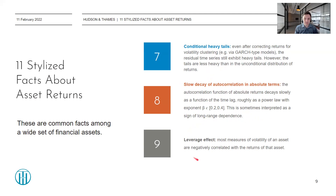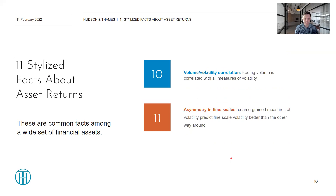Point nine is the leverage effect: most measures of volatility of an asset are negatively correlated with the returns of that asset. Point ten is volume/volatility correlation: trading volume is correlated with all measures of volatility. Point eleven is asymmetry in timescales: coarse-grained measures of volatility predict fine-scale volatility better than the other way around.